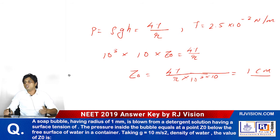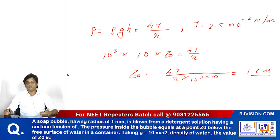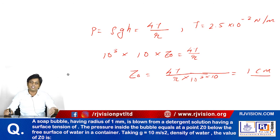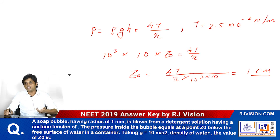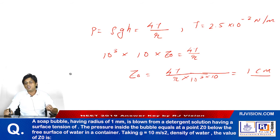We know the value of ρ is 10³, g is 10, and instead of h they have given z₀, so we need to find the value of z₀. It is equal to 4T/R, where T is the surface tension and radius of the soap bubble are both given. After substituting all values: